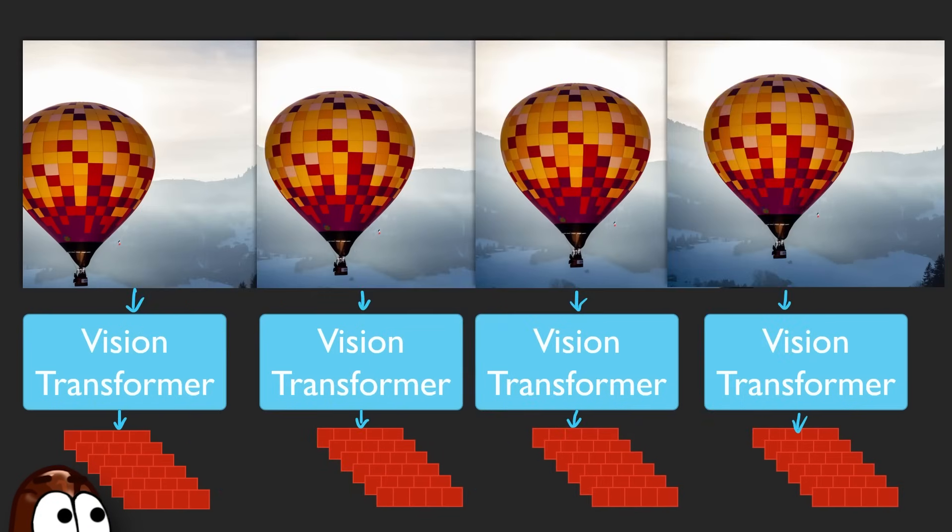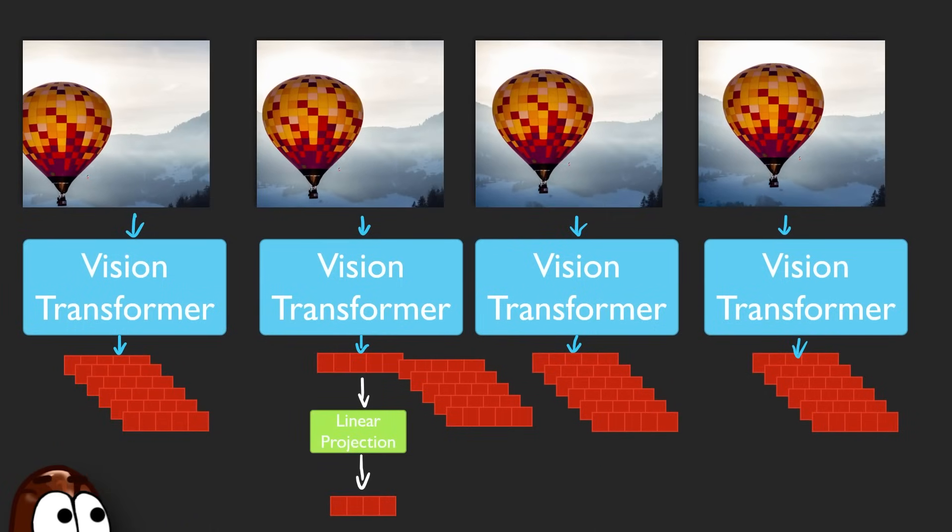Now let's look under the hood. How is Storm actually built? Storm combines three powerful components. First, it uses SigLIP, a vision transformer that turns each video frame into a set of image tokens—256 per frame to be precise. Then it reduces the dimensionality of each vector with the same linear layer.